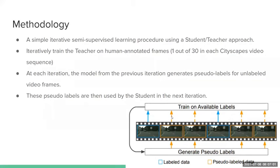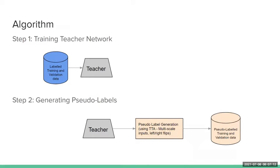This is based on noisy students, but without noise in the augmentations. Step one is you have a teacher network and you train on the labeled data. Once you've trained on this labeled data, you generate pseudo labels for the unlabeled frames using test time augmentations. In this case, they used multi-scale inputs and left-right flips.